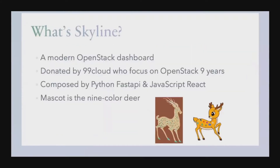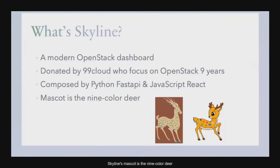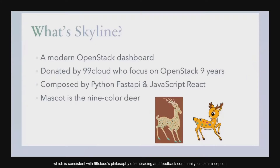Skyline is a modern OpenStack dashboard, donated by 99cloud, who have focused on OpenStack for nine years. Skyline is composed of the Python FastAPI framework and the JavaScript React framework. Skyline's mascot is the 9-color-deer, which comes from the Dunhuang Mural — the 9-color-king-deer — whose moral is Buddhist cause-effect and gratefulness, consistent with 99cloud's philosophy of embracing and giving back to the community since its inception.